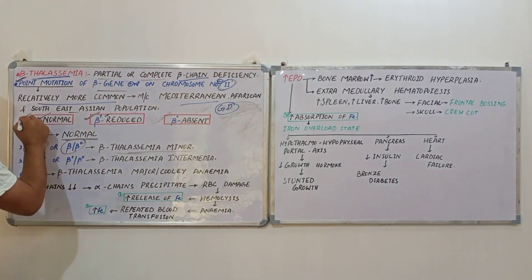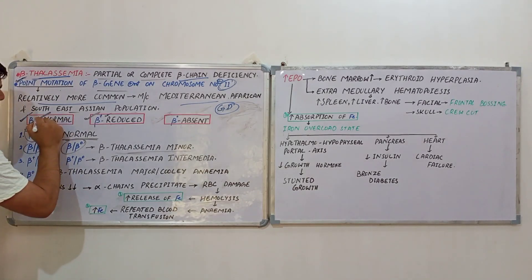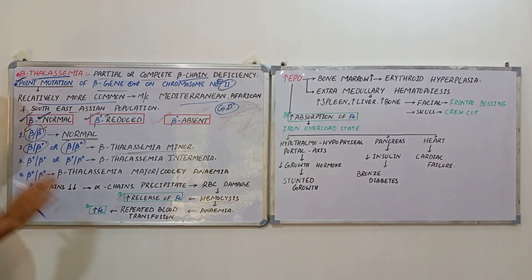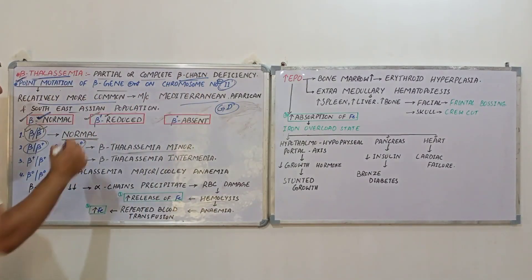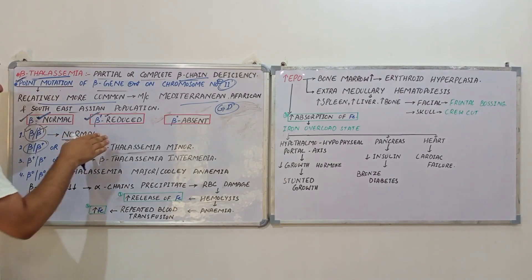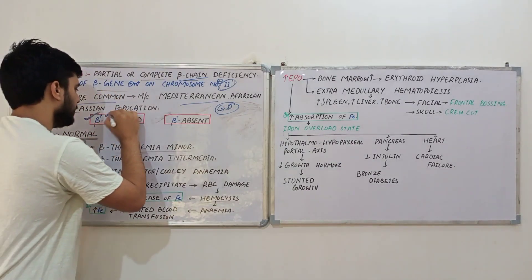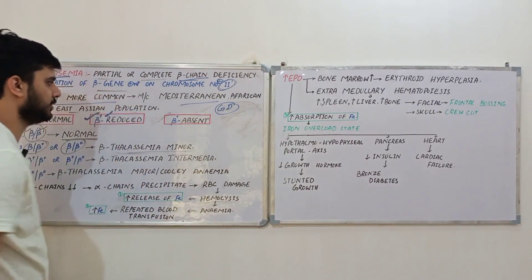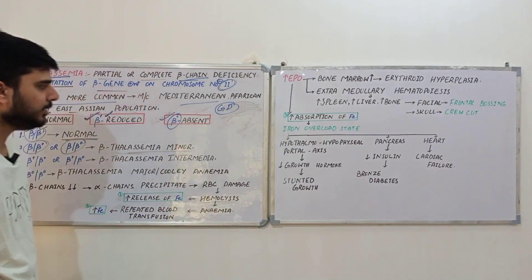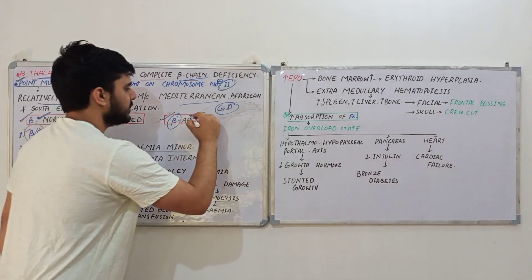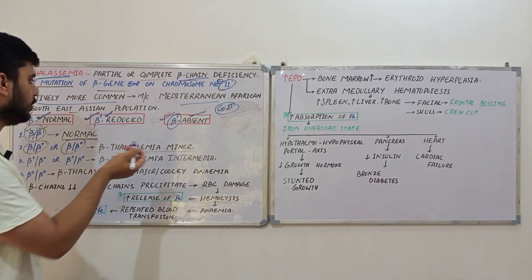Beta genes may have any of three forms. If we write β, this will form normal beta polypeptide chains. If we write β⁺, this gene will synthesize beta chains but in reduced amounts. If we write β⁰, this form will not synthesize any beta chain at all — complete absence of beta chains.